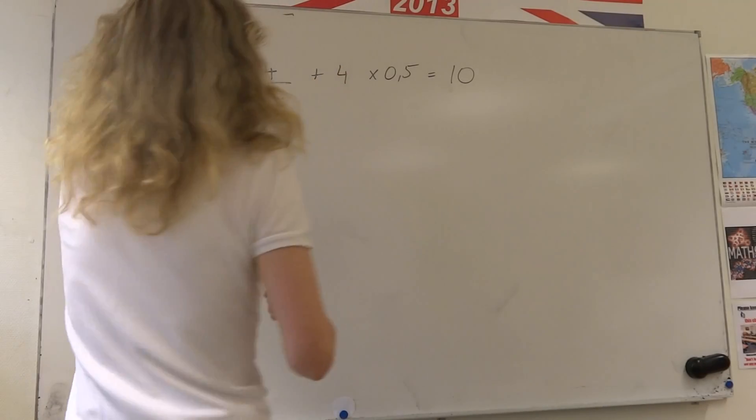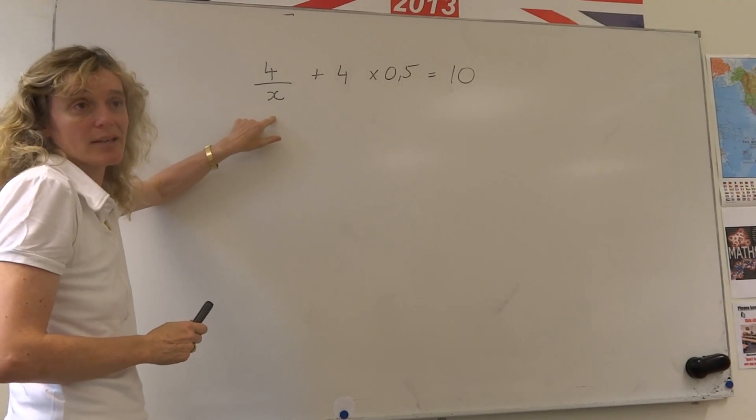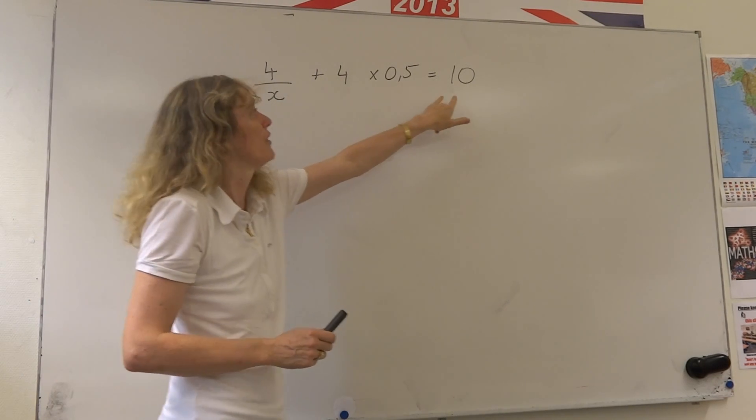Right, we've got a question here where we've got 4 divided by an unknown, x. We don't know what it is. Plus 4 times a half equals 10.